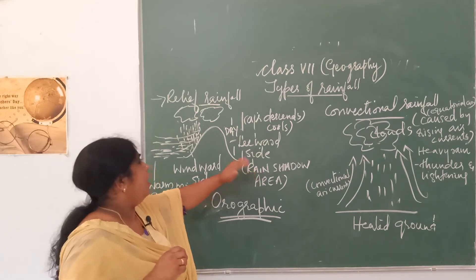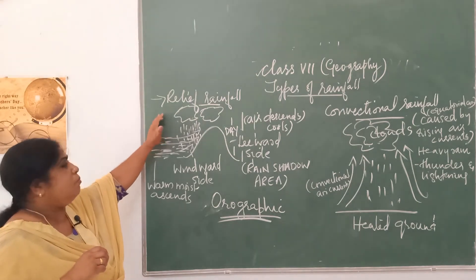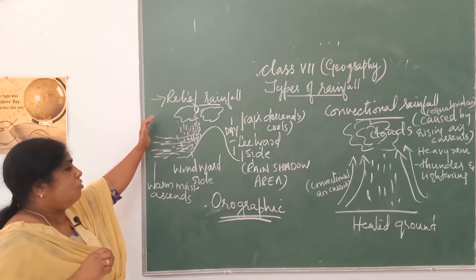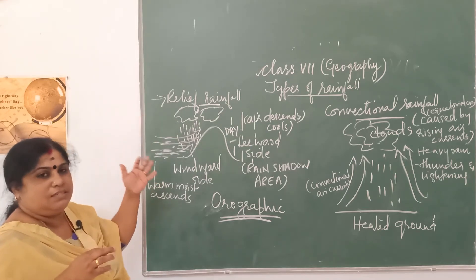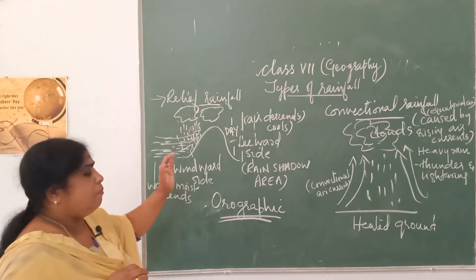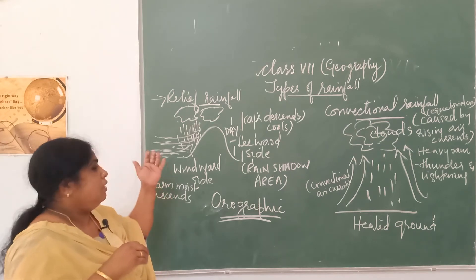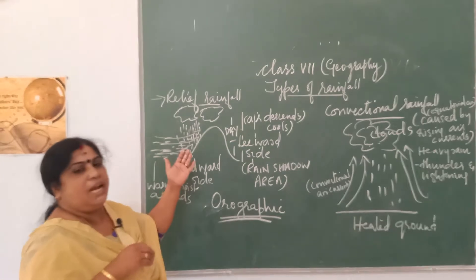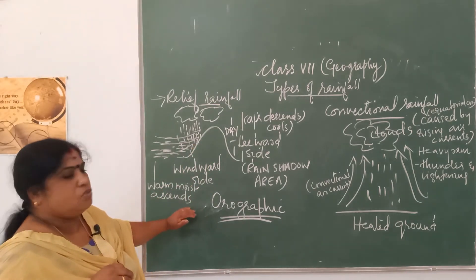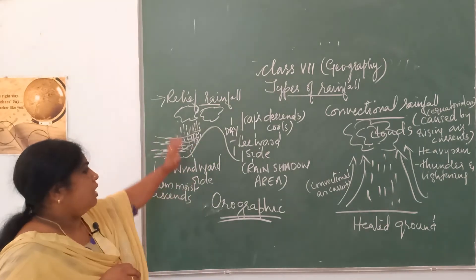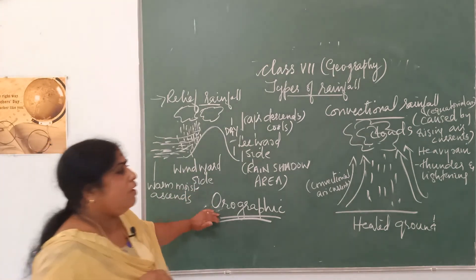This is how relief rainfall occurs, and this is the prominent way by which we Indians also get rainfall. In India, wind blows from the seas — the Arabian Sea and the Bay of Bengal — and is blocked in the northern portion by the mighty Himalayas, which brings heavy rainfall to different parts of India. This is relief rainfall or orographic rainfall.